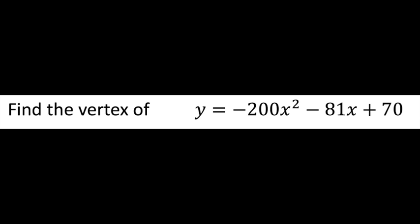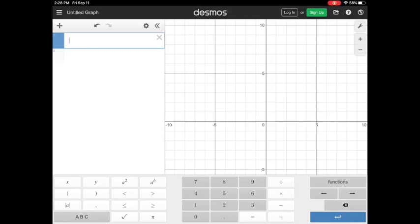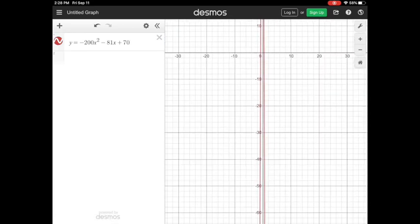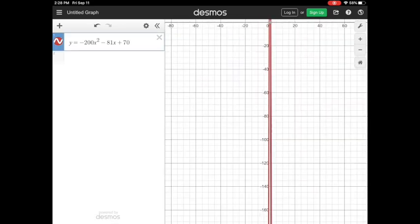y equals negative 200x squared minus 81x plus 70. Using the Desmos graphing calculator actually makes this problem pretty easy. All I'm going to do is type in that equation, so I just typed in y equals negative 200x squared minus 81x plus 70, and you see I get some sort of graph here.